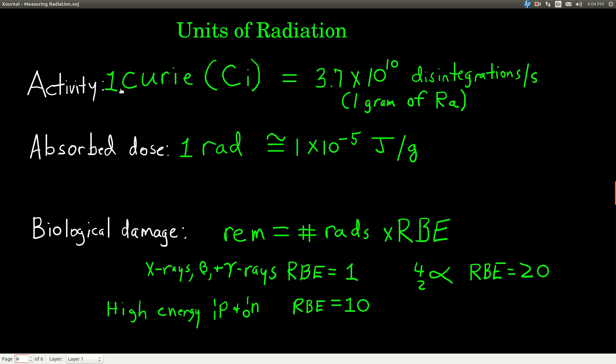And so if something had an activity of two curies, it would be twice this. Or we could have the SI prefixes like micro or milli. If it's one millicurie, it's one thousandth of this, or 10 to the 7th, 3.7 times 10 to the 7th. So that's activity, that's the unit we'll use.